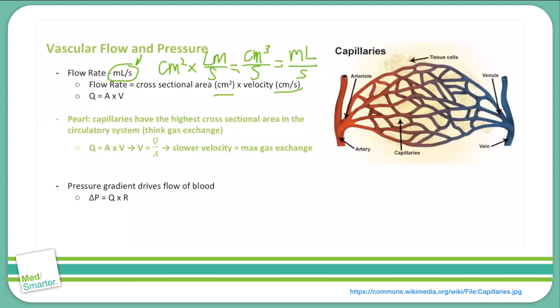Now you'll sometimes see the calculation for flow rate written like this: Q equals AV, where Q represents the flow rate, A is the cross-sectional area, and V is the velocity of blood through the blood vessel. Now I'd like to take the opportunity to do a really high-yield physiology tie-in here.